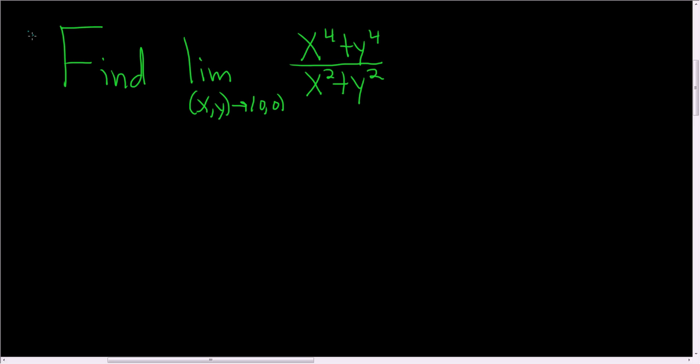We're being asked to find the following limit. Whenever you have to evaluate a limit, the first thing you should always try is to see if plugging in the numbers works. So if we plug in x equals 0 and y equals 0, we end up with 0 plus 0 divided by 0 plus 0. So 0 over 0. It doesn't work, but it's at least worth thinking about.